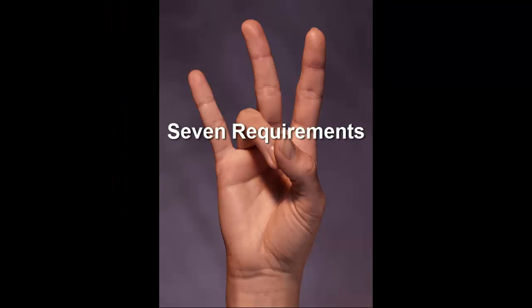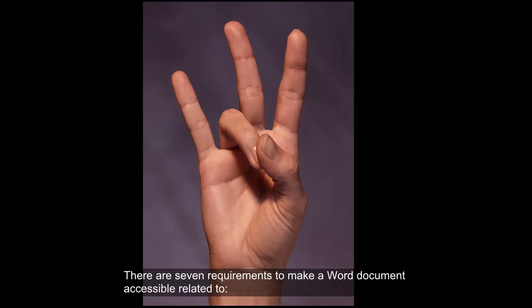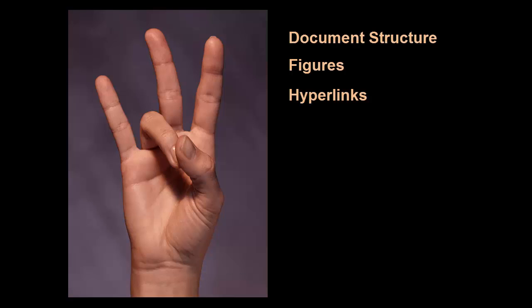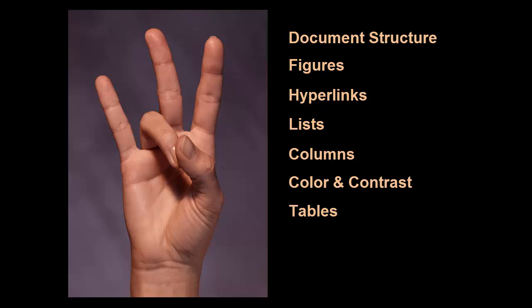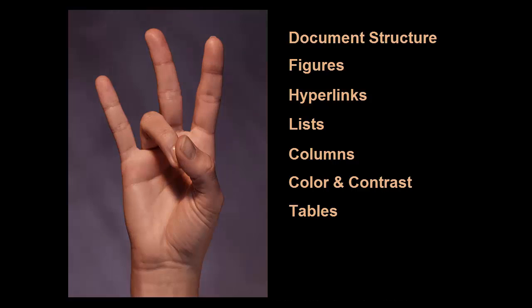Seven Requirements. There are seven requirements to make a Word document accessible, related to document structure, figures, hyperlinks, lists, columns, color and contrast, and tables. The other modules in this course will explain these in more detail.